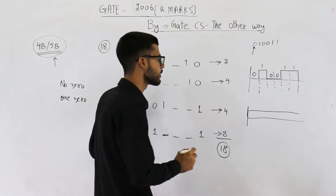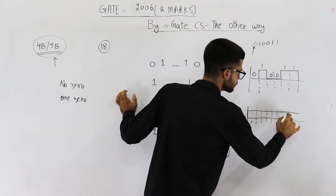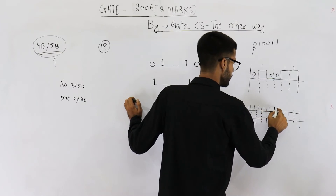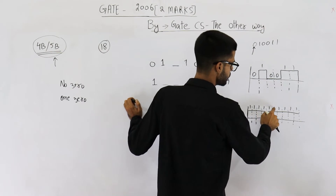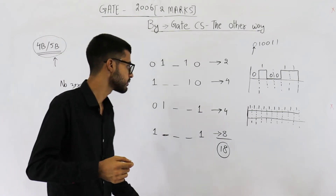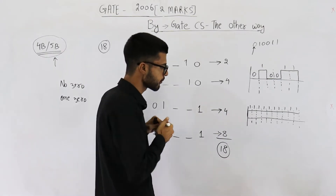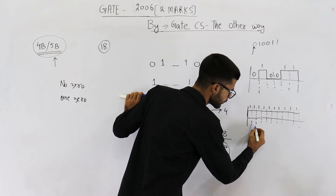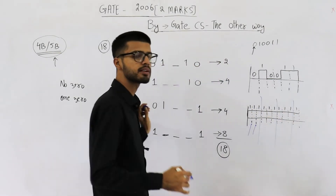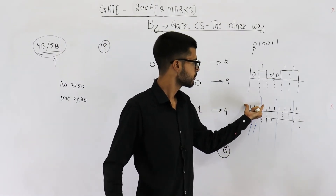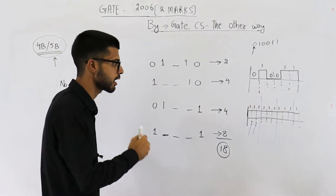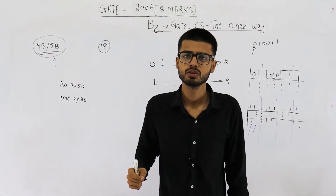Suppose the sender is trying to send 10 ones. But if the receiver's clock is not perfectly synchronized — suppose the receiver's clock is a bit slow — it will see only 3 ones because the signal is high for that duration. So we cannot send continuous ones. Similarly, continuous zeros will also be a problem.